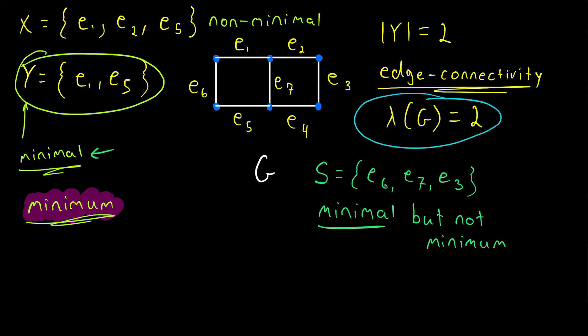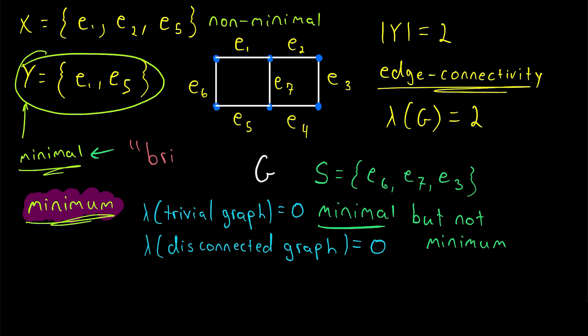Let's mention one last thing about edge connectivity. We already said that we don't consider edge cuts within the trivial graph, because it can't be disconnected. However, we do, for convenience, define the edge connectivity of the trivial graph to be equal to zero. Similarly, the edge connectivity of any disconnected graph is zero, because zero edges need to be deleted to disconnect it. A concept kind of related to edge cuts are bridges. I'll leave a link in the description to my lesson on bridges, if you're interested.